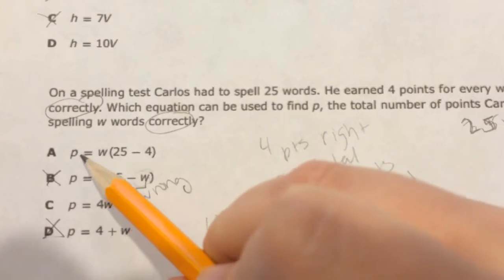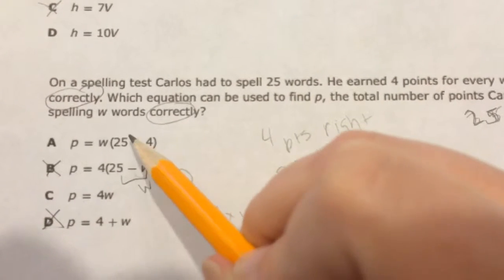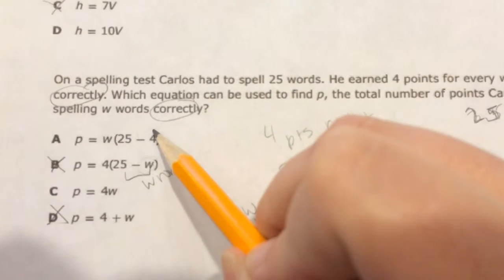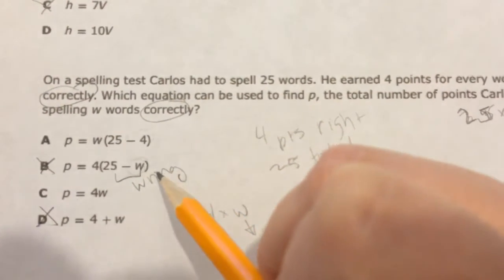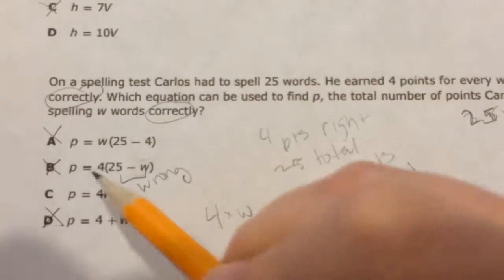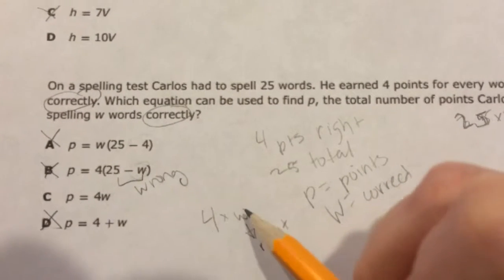This one says P equals W in parentheses times 25 minus 4. Well, 25 is questions and 4 is points. I don't think I'd be taking the number of questions and subtracting the number of points. That sounds kind of silly. So I don't think that one's it either. If I go back and look at this one, points equals 4 times the number he got right.